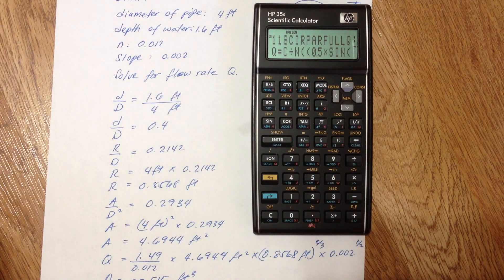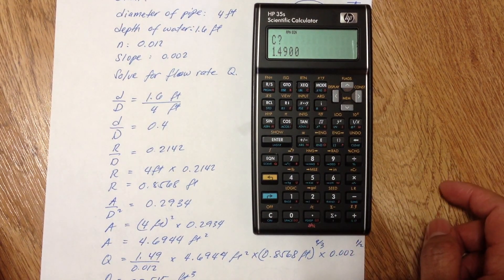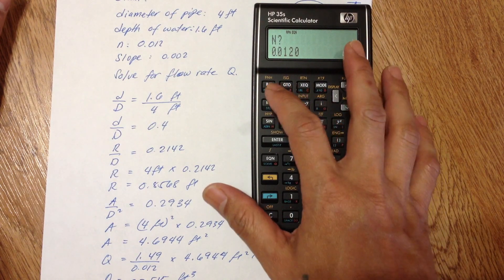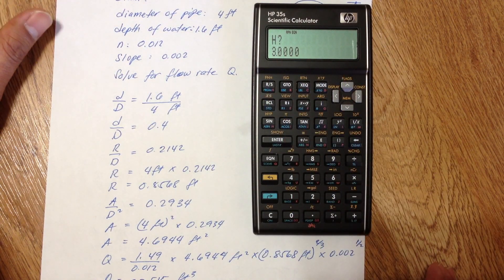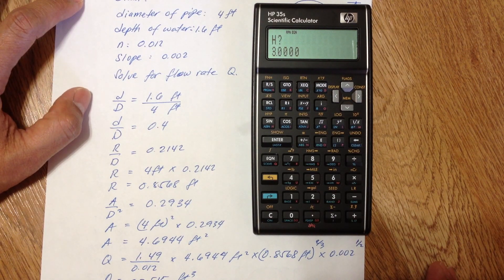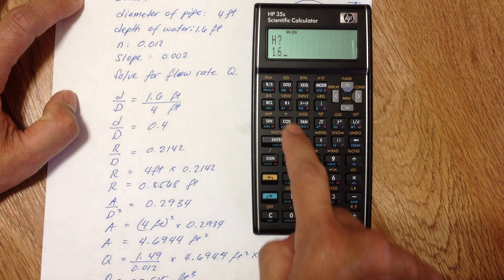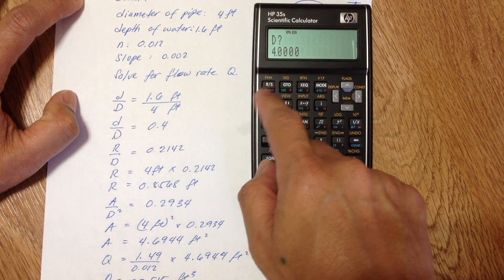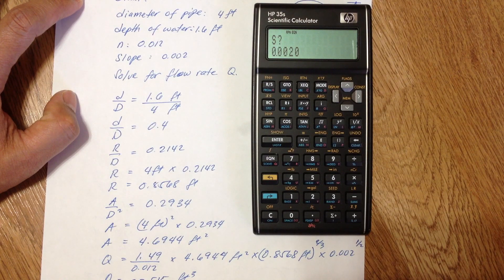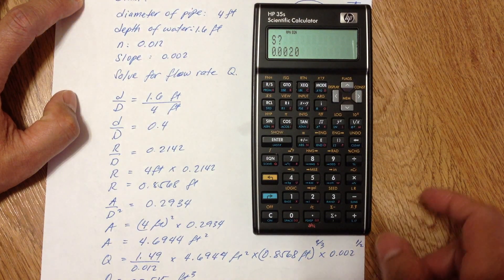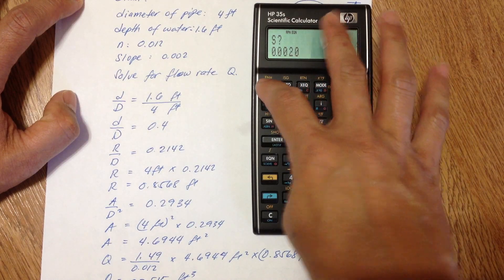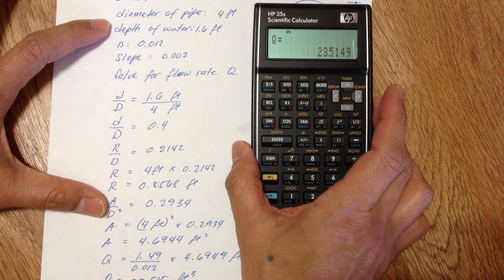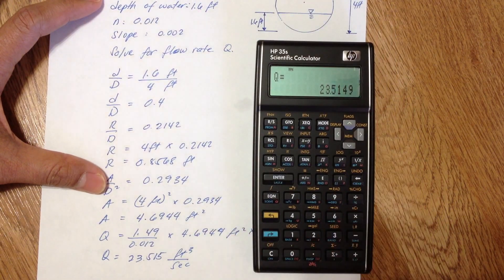And if I use the equation, which is the same equation 118, go to equation and then press enter. 1.49, it's the same, just press R/S. n is 0.012, it's the same, just again R/S. H is not 3 anymore, it's 1.6, so 1.6 then R/S. Diameter of the pipe still the same, 4 feet, run stop. R/S, I mean S is the slope, 0.002, the same thing, run stop. And we have 23.5149. Did we get the right value? I guess we did.